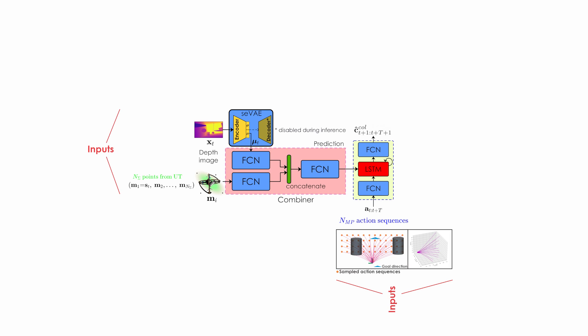Our proposed modularized solution for learning-based navigation builds upon a semantically enhanced variational autoencoder module that can be independently trained using both real and simulated data to produce a compressed latent representation of a raw depth image.